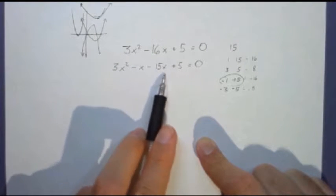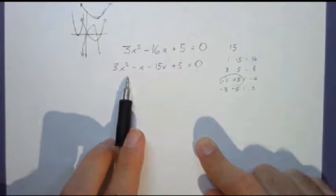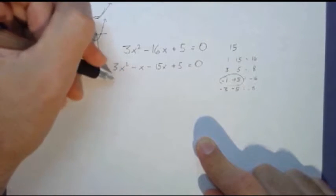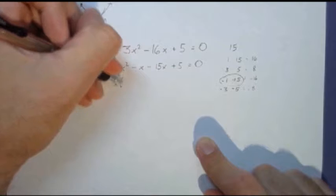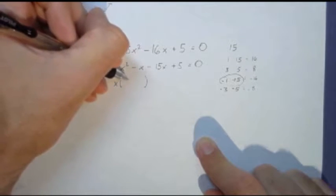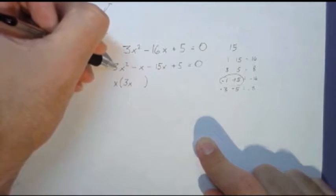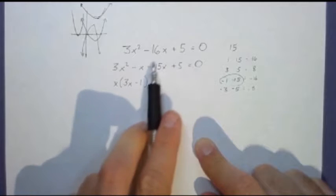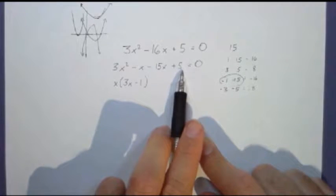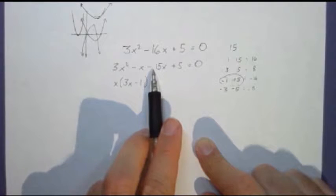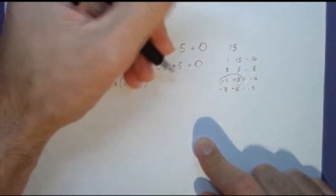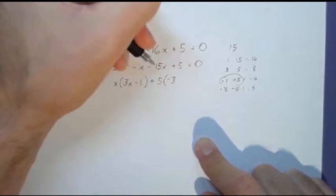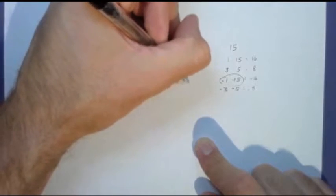Now I can use a technique called factor by grouping, where I just look at these two numbers and say, what do these have in common? So I have three x, and here I have a one. Now I look at the remaining two terms. What do they have in common? I can pull out a five, which leaves me with a negative three x and a plus one.